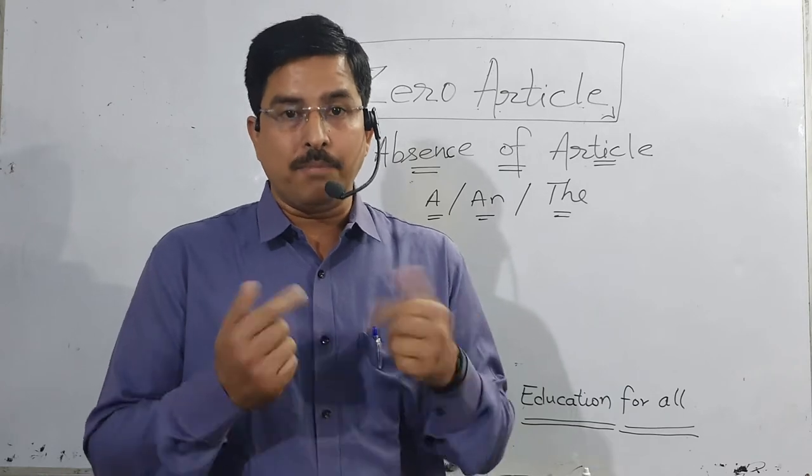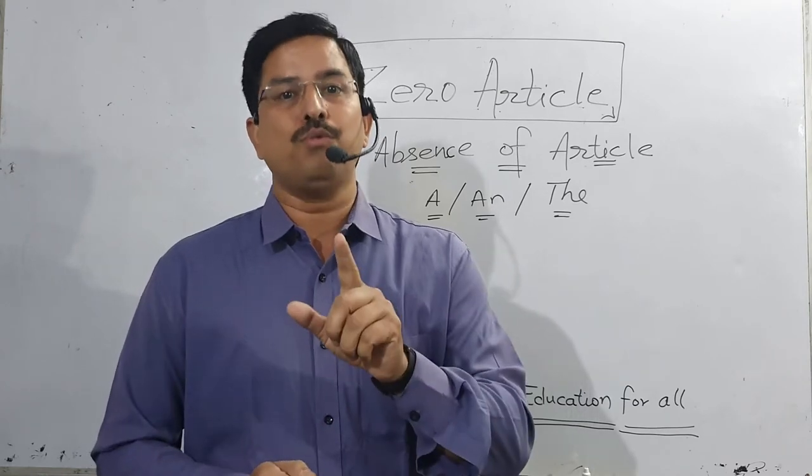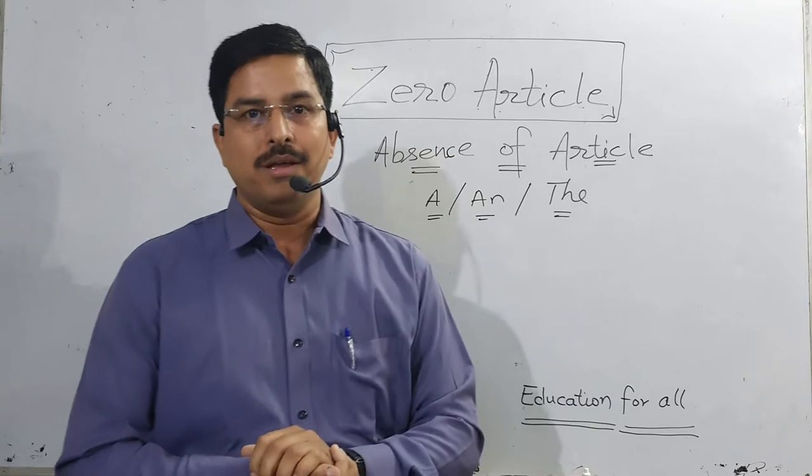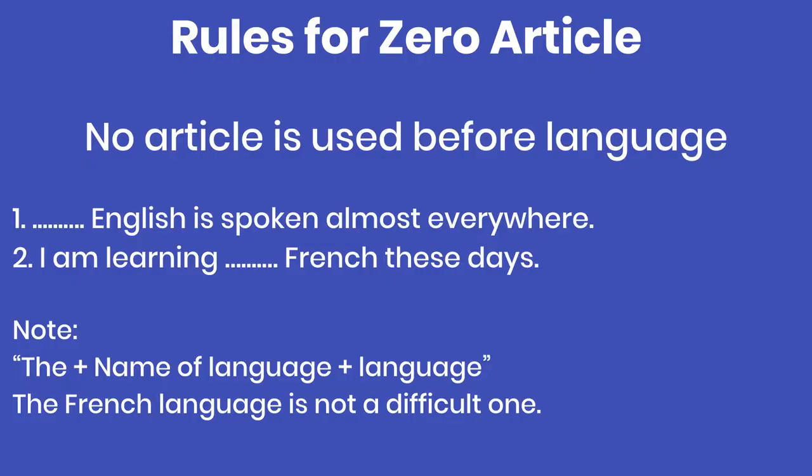As you can see in these sentences: First — 'English is spoken almost everywhere.' This is a language name; no article will come before it. Second — 'I am learning French these days.' No article should come before French, because it is the name of a language. Let me repeat the rule: if 'the' article comes before a language name, its meaning changes to refer to the people who speak that language — it becomes a plural noun.